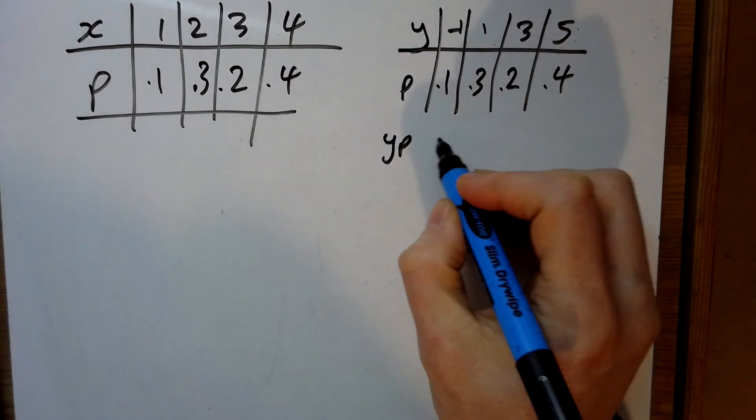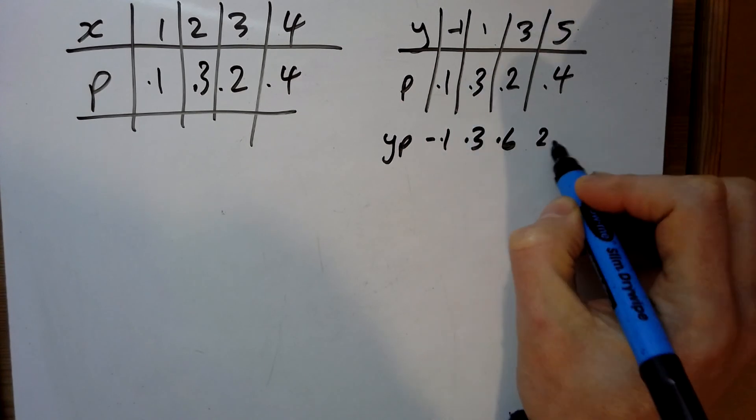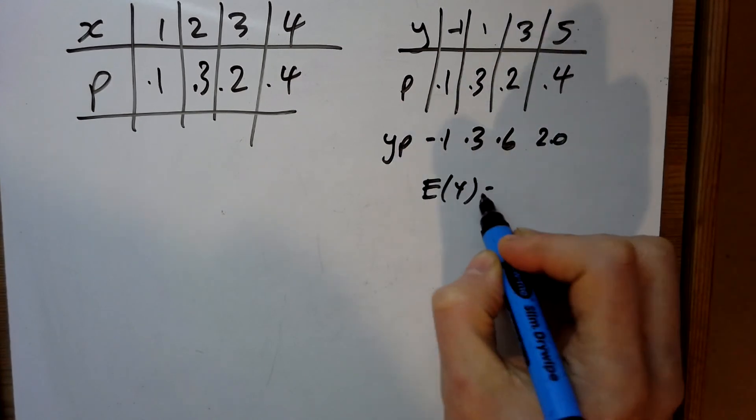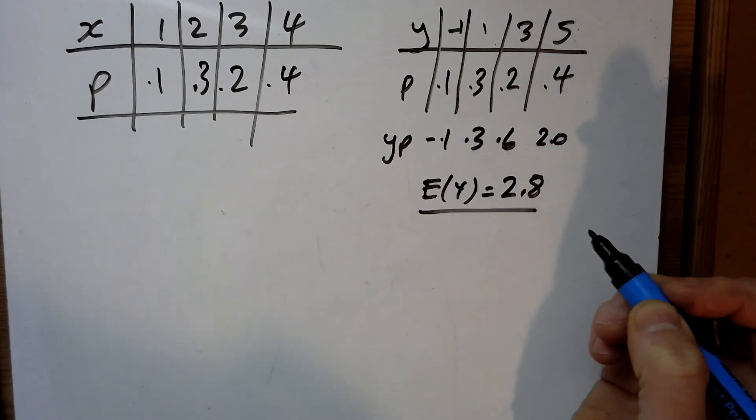So yp minus 0.1, that's 0.3, that's 0.6, that's 2.0. So the expected value of y there is, that's 2.8 isn't it? The expected value of y is 2.8.